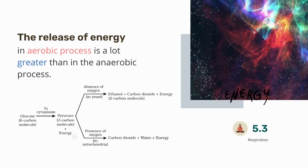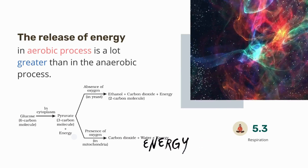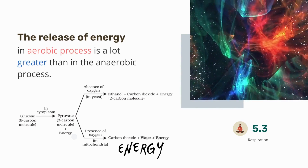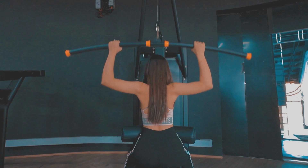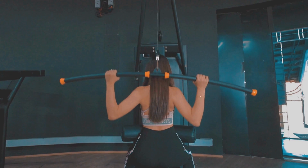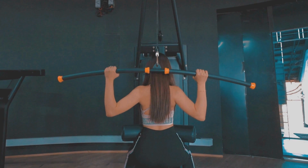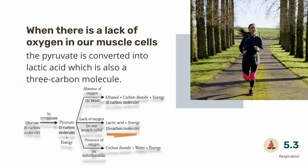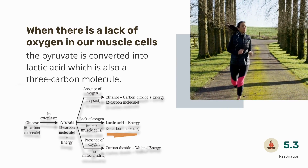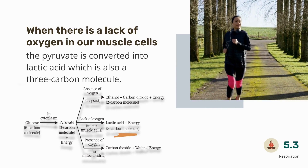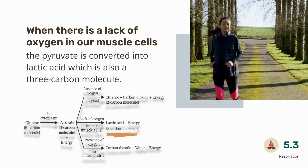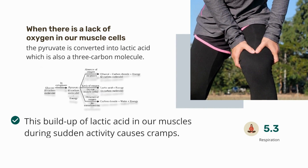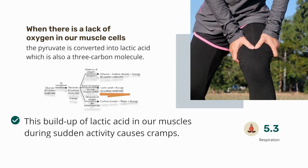The release of energy in the aerobic process is a lot greater than in the anaerobic process. Sometimes, when there is a lack of oxygen in our muscle cells, another pathway for the breakdown of pyruvate is taken — the pyruvate is converted into lactic acid, which is also a three-carbon molecule. This buildup of lactic acid in our muscles during sudden activity causes cramps.